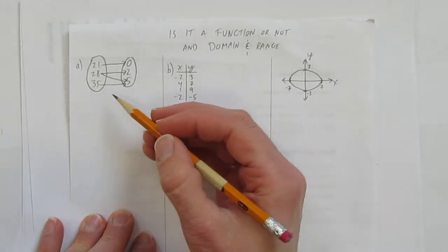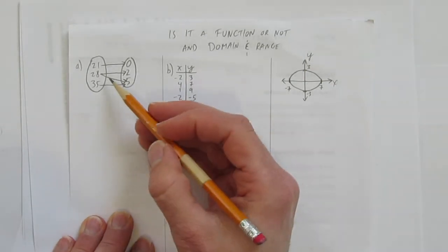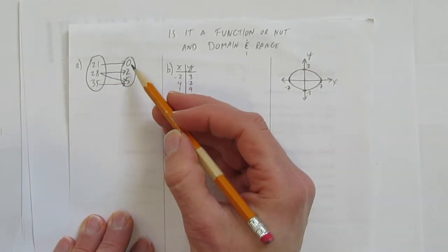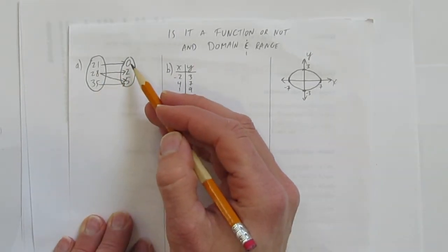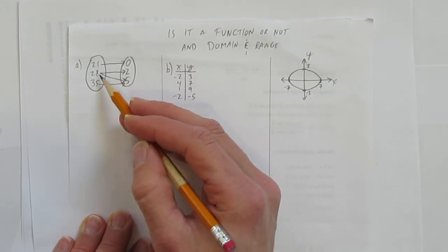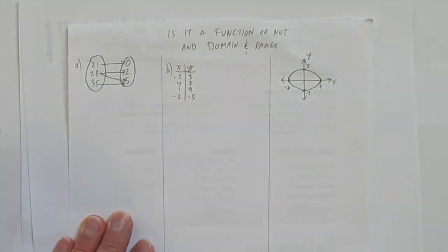First function we've got here is a mapping rule. It says 21, 28, and 35 are the x's, and 0, 2, and 5 are the y's. And furthermore, x of 21 goes to 0, x of 28 goes to 2 and it also goes to 5, and x of 35 goes to 5.